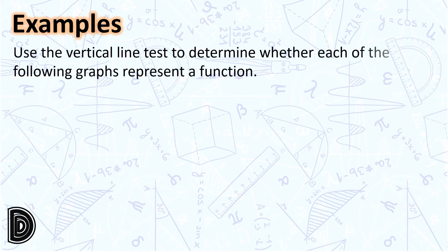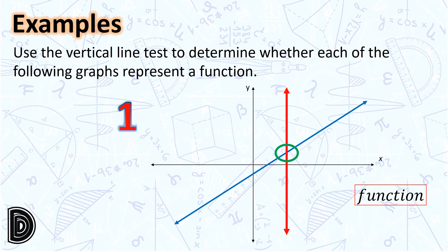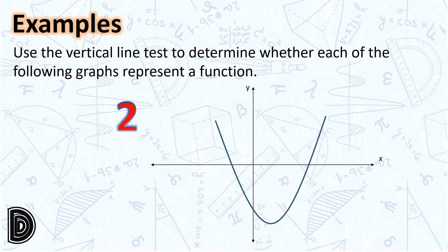Let's have some examples. Use the vertical line test to determine whether each of the following graphs represents a function. Number 1 is a graph representing a line. When we draw the vertical line test and make sure it intersects the graph, however we draw the vertical line test, it will only intersect this line at a single point. Therefore, this line that represents a relation is a function. Number 2 is the graph of a parabola. However we draw the vertical line test, it will intersect the parabola opening upward at a single point. Hence, this is a function.